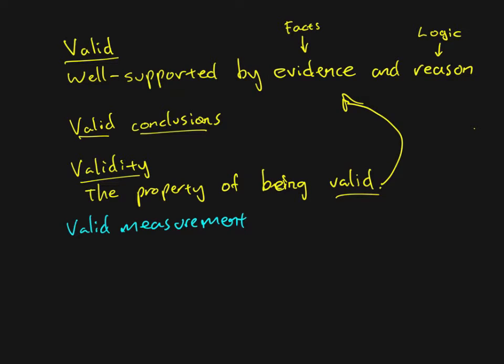A measurement that is supported by evidence and reason. Well, a measurement is trying to measure a particular variable or construct. So a valid measurement is just a measurement that measures what you think or claim that it measures.